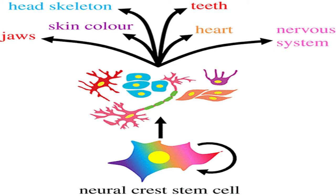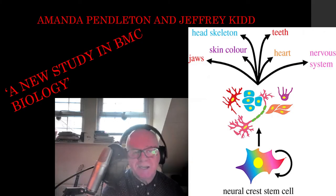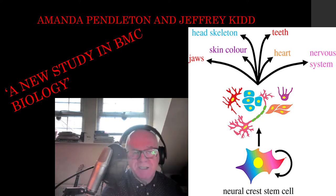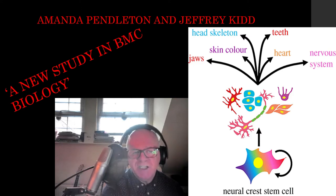Changes in the number or activity of neural crest cells in any of the final locations they migrate to can subsequently alter the size, shape, or level of expression of the corresponding trait. Now that we have a basic understanding of neural crest cells in respect of dogs, Pendleton and Kidd utilised new genomics technology to address the question of the behavioural change of wolves that allowed domestication. The change in behaviour was its first evolutionary step to becoming a dog, and this change was the result of environmental pressure on neural crest cells that allowed natural selection to ensure the wolves with the tame genes survived.